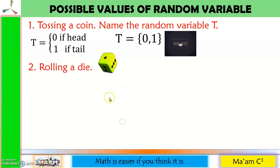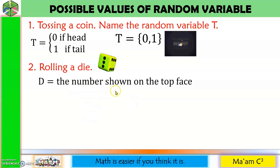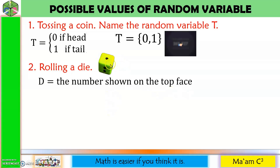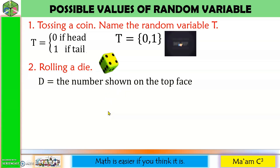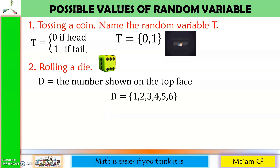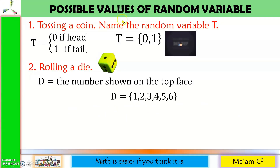Another example: rolling a die. The random variable is the number shown on the top face when the die stops rolling. The die has six faces and each face contains a unique number of dots — those are 1, 2, 3, 4, 5, 6. So these are the possible outcomes of our random variable.